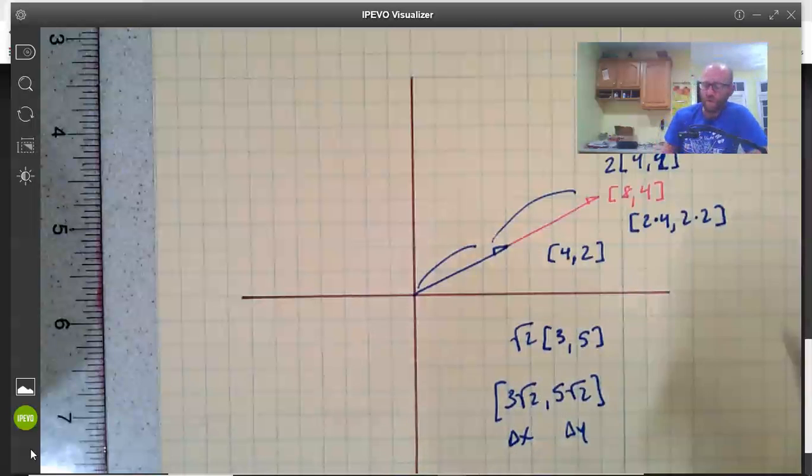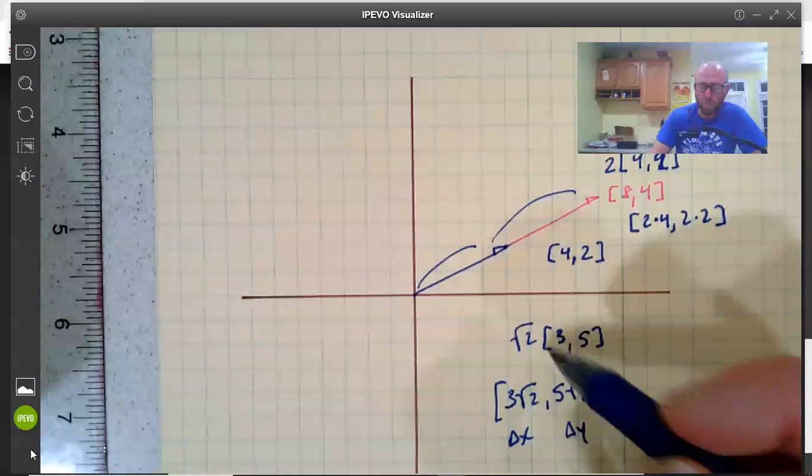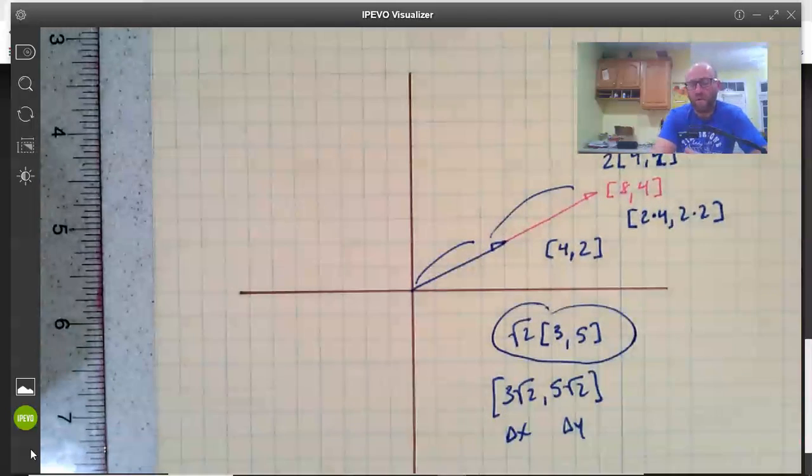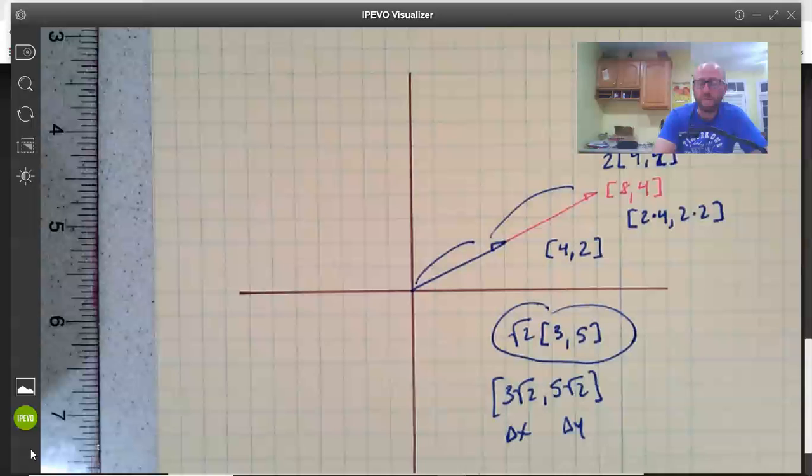So if you're asked to find the components for a vector and it's written like that you really just multiply the scalar, the number on the outside, by the two components on the inside. That's all we're asking you to do.